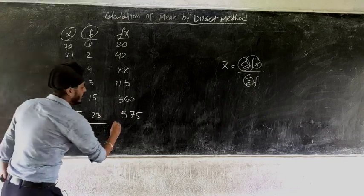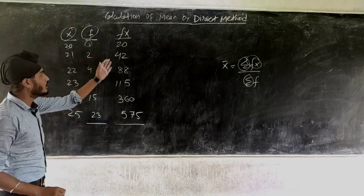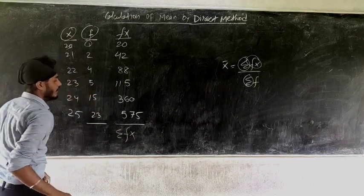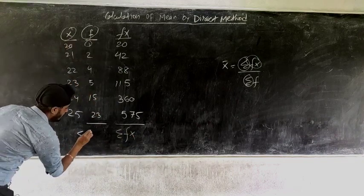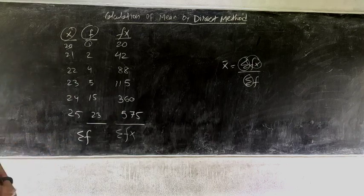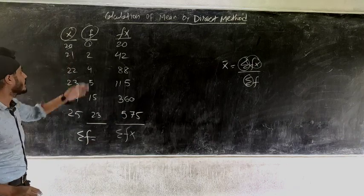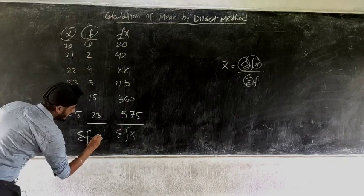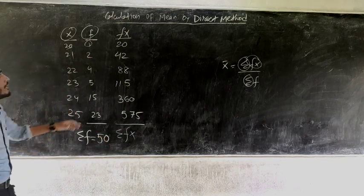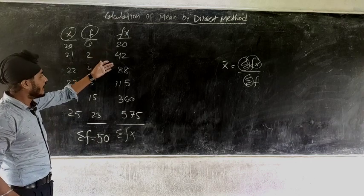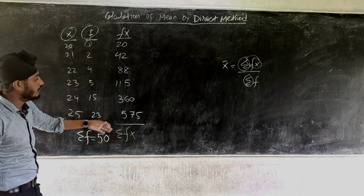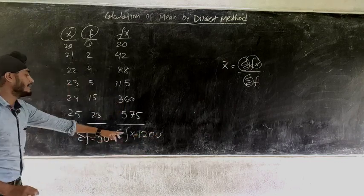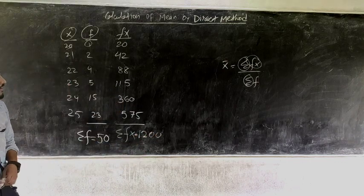Now you need to find the totals. When we find the total of fx we call it Σfx, and when we find the total of the frequencies we call it Σf. Totalling the frequencies: 1 + 2 + 4 + 5 + 15 + 23 = 50. Totalling the fx values: 20 + 42 + 88 + 115 + 360 + 575 = 1200. So we got Σfx = 1200 and Σf = 50.